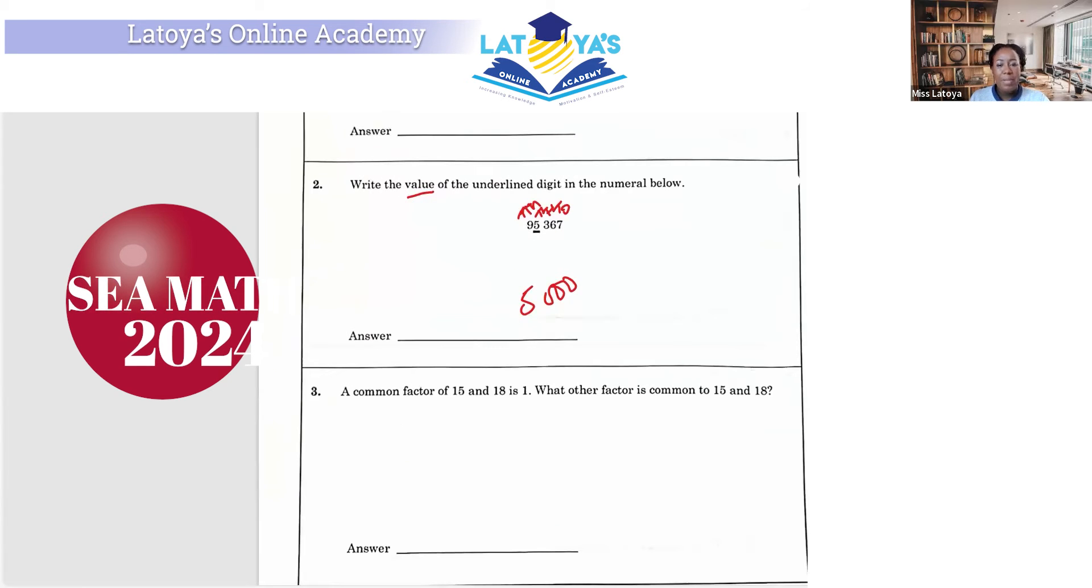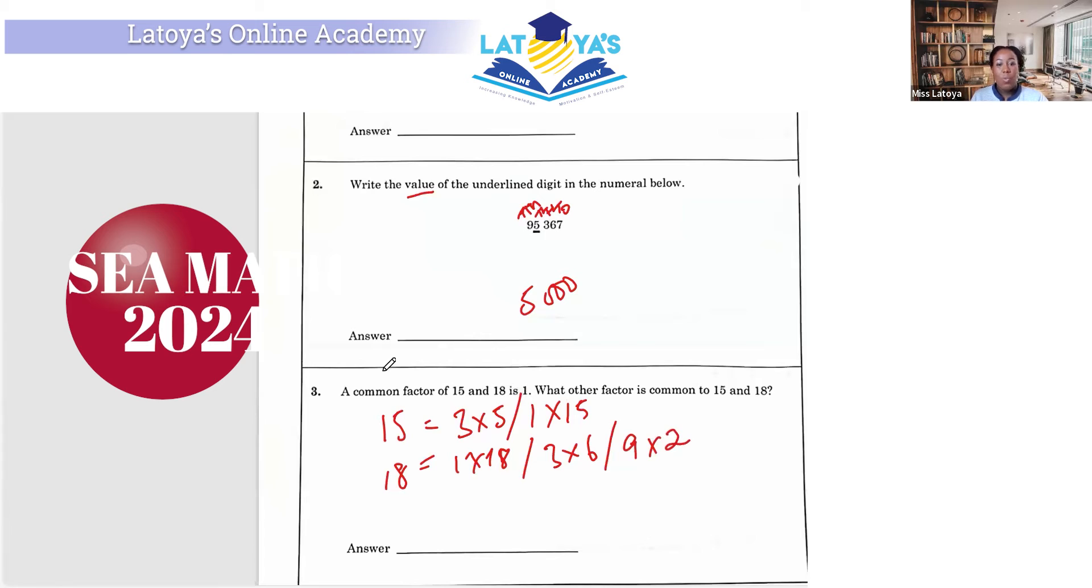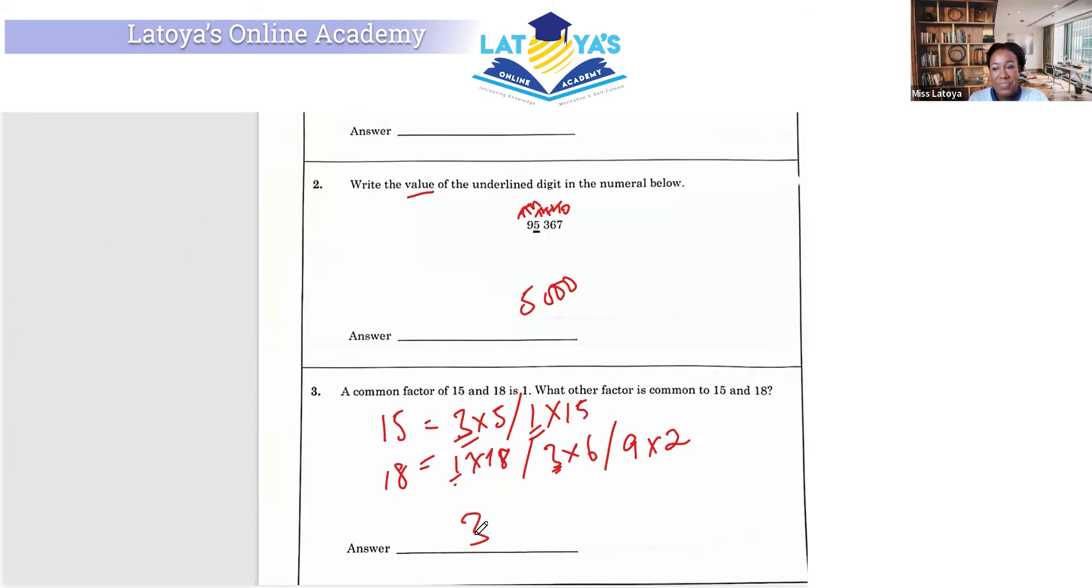Question three says, a common factor of 15 and 18 is one. What other factor is common to 15 and 18? Now, when you're thinking of factors, you can think of the numbers you can multiply to give you 15. You can multiply 3 by 5, or you can multiply 1 by 15. What can you multiply to give you 18? You can multiply 1 by 18, you can multiply 3 by 6, or you can even multiply 9 by 2. So what is the common factor here? They have 1 in common, and in addition to that, they also have 3 in common. So 3 is going to be the other factor.